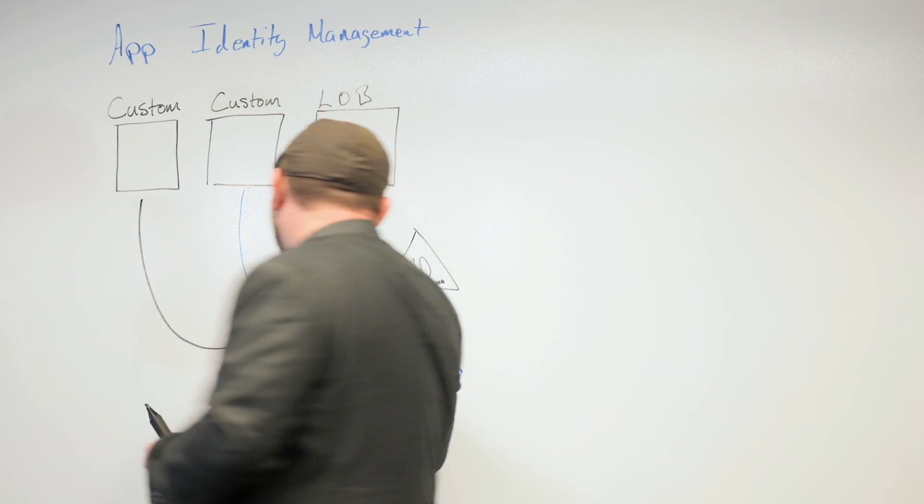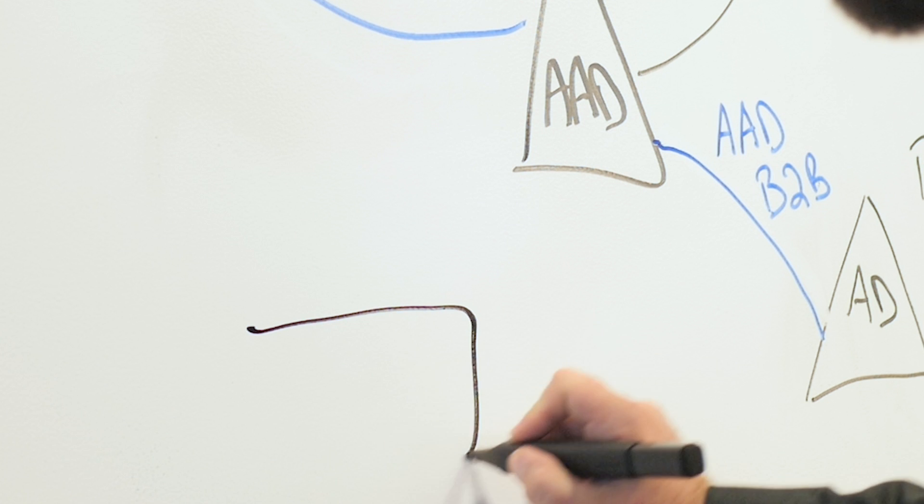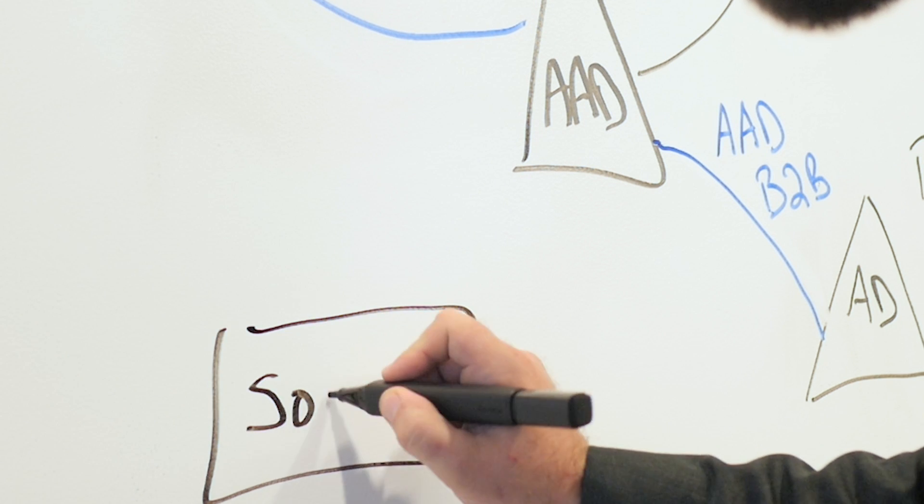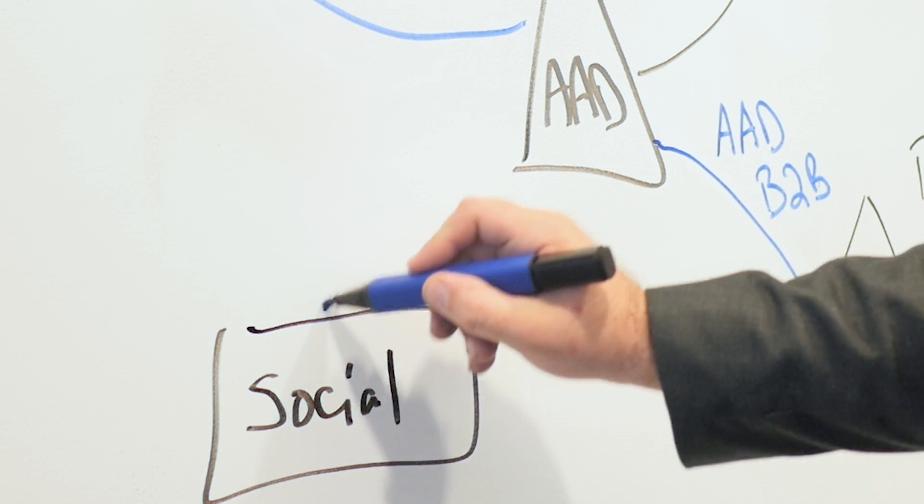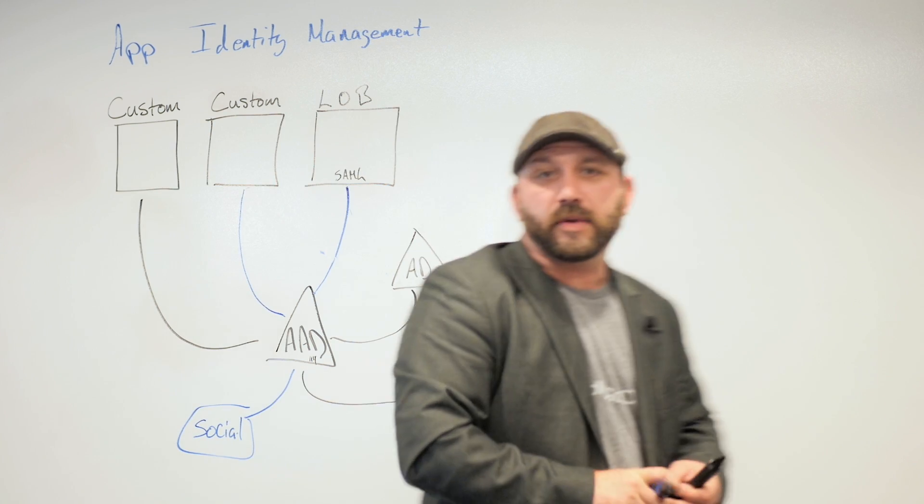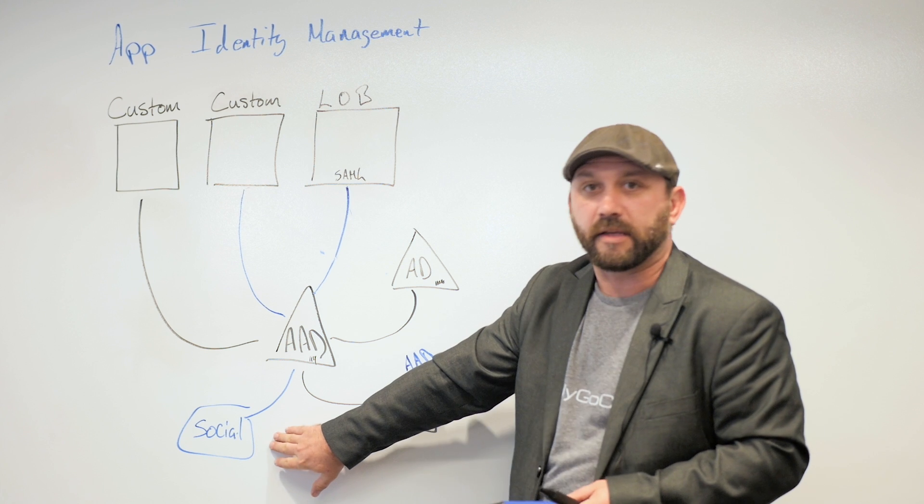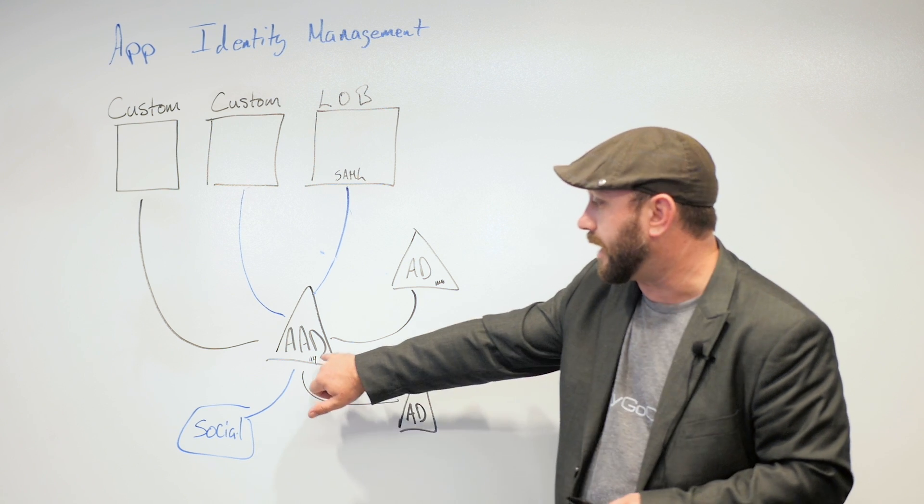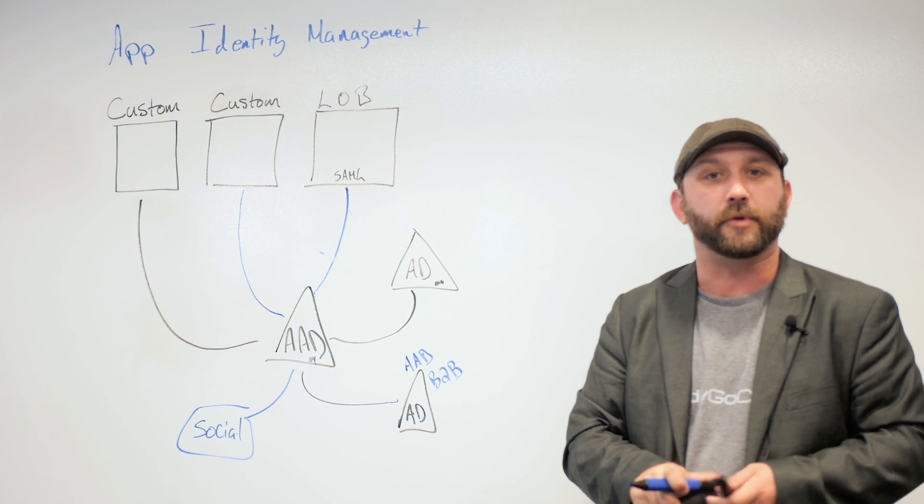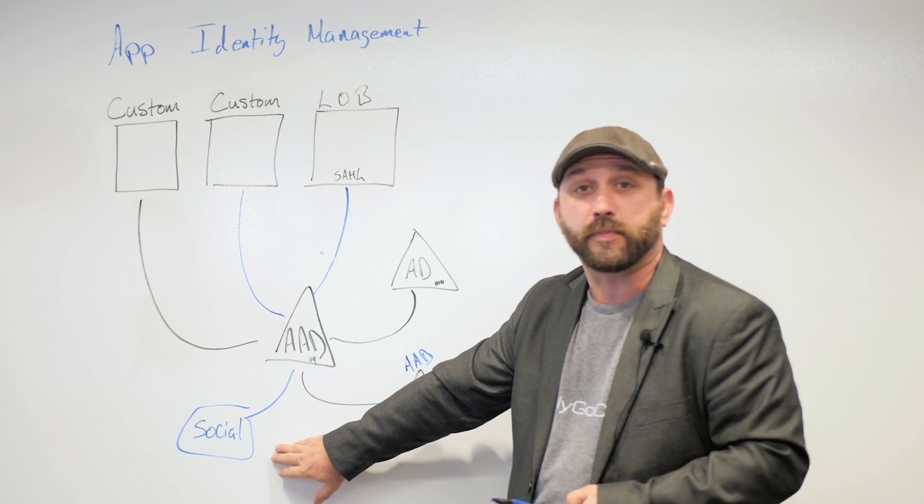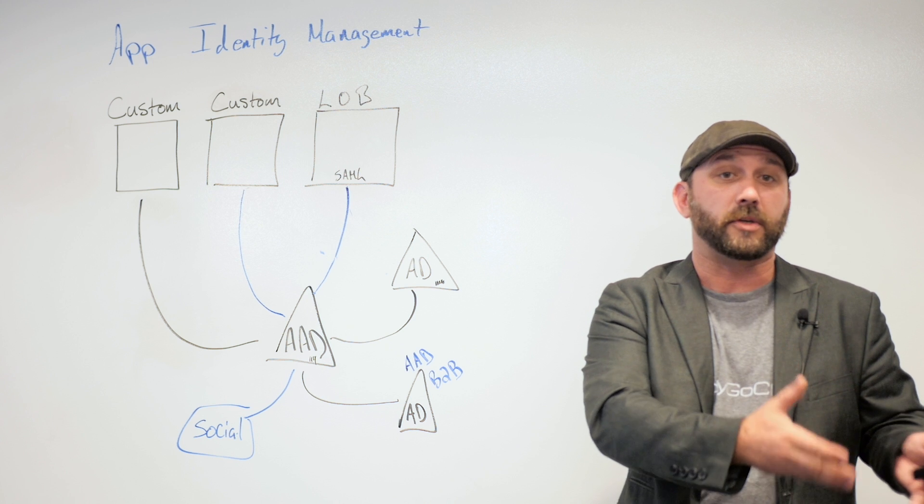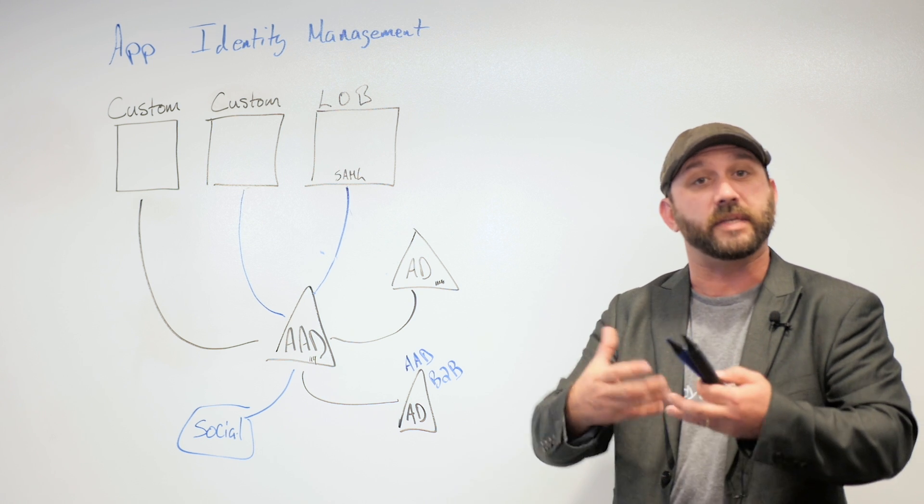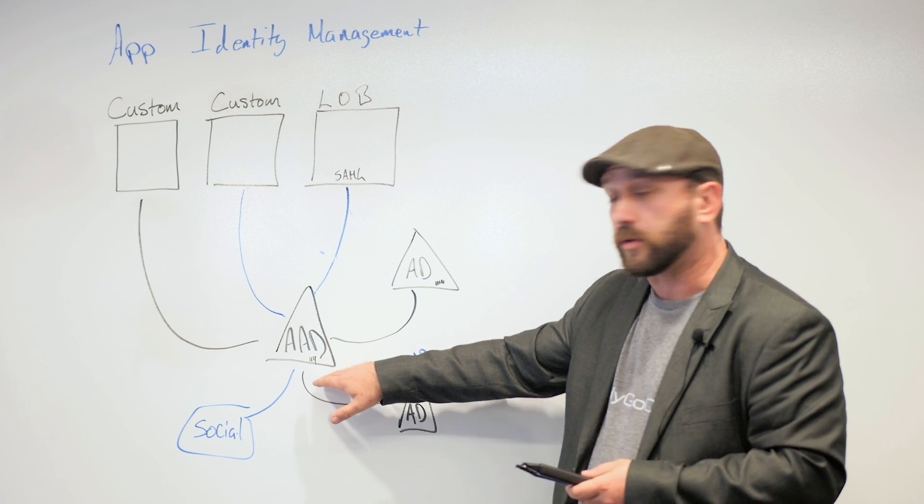Well, what we can do is take a social identity and we can map that into AAD the same way. So now if someone has a social identity in Facebook or Twitter, we can map that to a user that's stored in Azure Active Directory. And we're not trusting Facebook with all our identities. All we're saying is that Facebook, we trust that the password that you have is a viable password for this identity. We map it to a user we control.